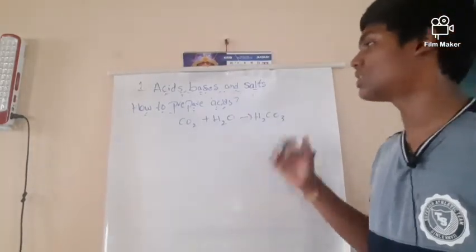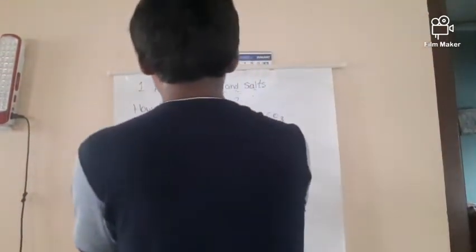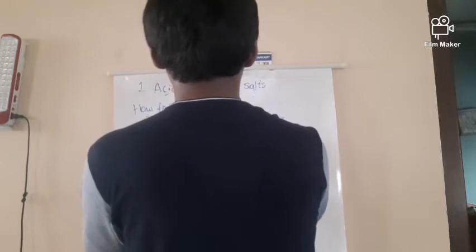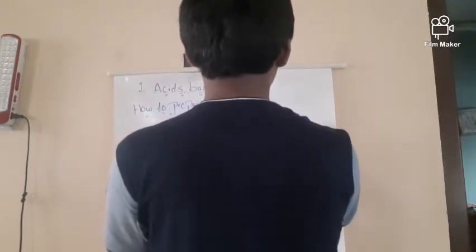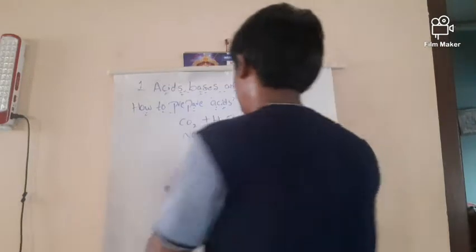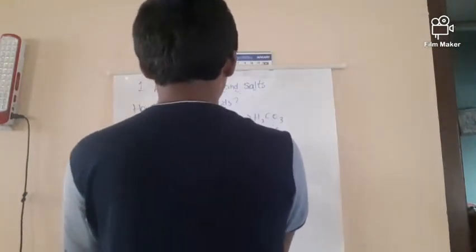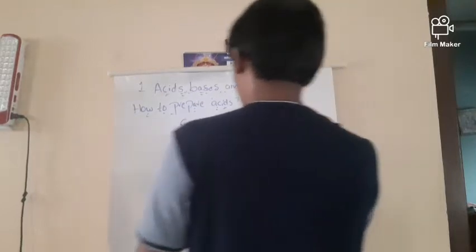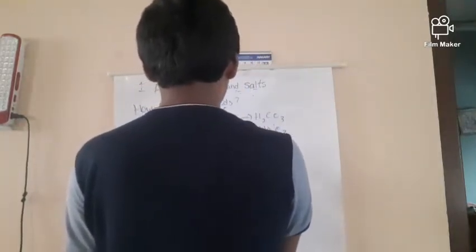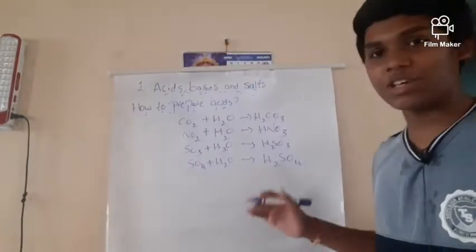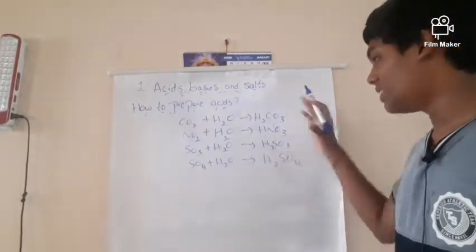Here are some more examples. When NO2 is dissolved in H2O, it forms HNO3 (nitric acid). When SO3 is dissolved in water, it forms H2SO3. When SO3 is dissolved further, it can form H2SO4. These are examples of non-metal oxides dissolving in water to form acids.